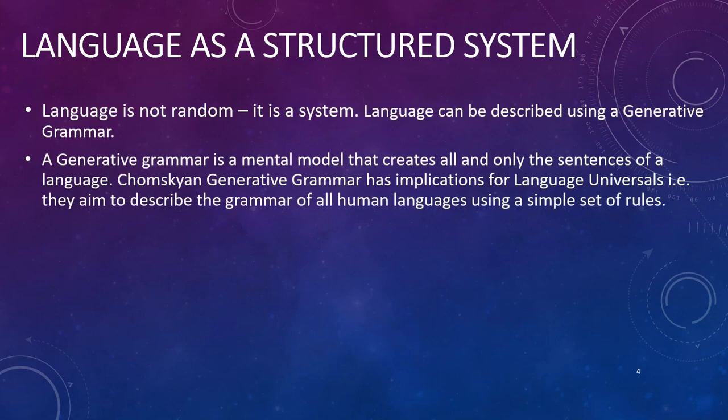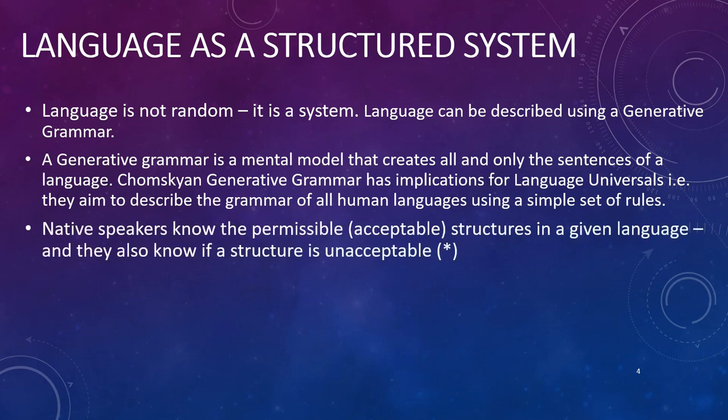Chomskyan generative grammar has implications for language universals as well. In other words, it aims to describe the grammar of all human languages using a relatively simple set of rules. When we wonder what speakers know when they know a language, it is not simply that they know words, their meanings, and how to use them.